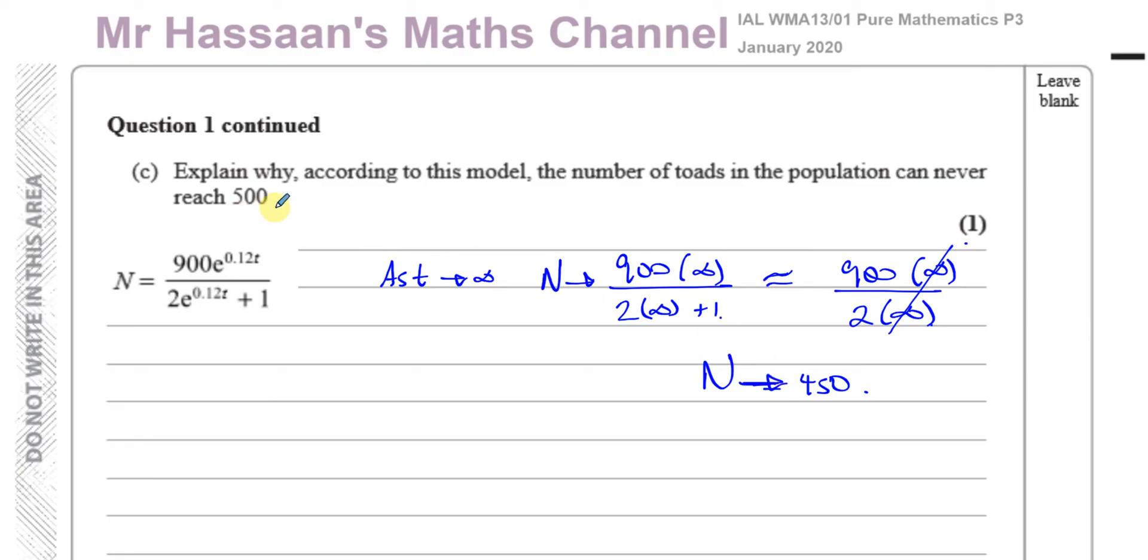It won't get to 450, it's going to approach 450. So as t approaches infinity, you can say the number of toads approaches this. So the number of toads approaches 450. So that's why it can never reach 500 because the highest it can get to is 450. So the upper limit for N is 450. Therefore, N can never equal 500.